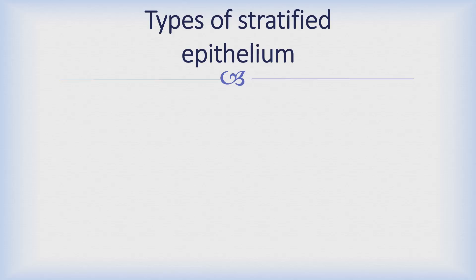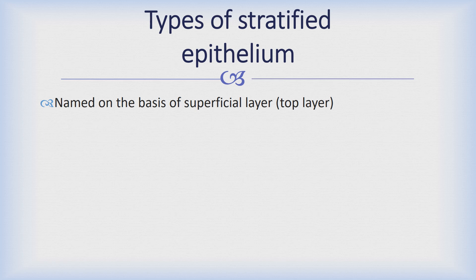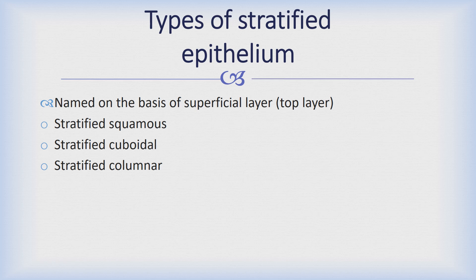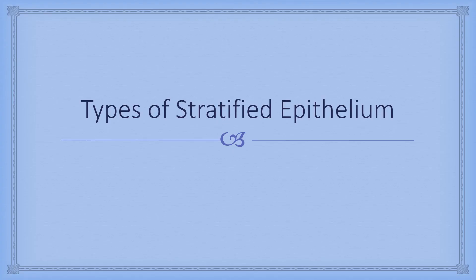Considering the most superficial layer or the top layer in a stratified epithelium, we name the epithelium as stratified squamous, stratified cuboidal, or stratified columnar. The other type of stratified epithelium is transitional epithelium. It is a special variety of compound epithelium because it has got different features as compared to the rest of the stratified epithelium. Now we are going to discuss each type of stratified epithelium one by one in detail.